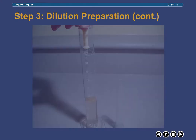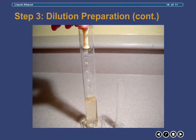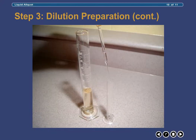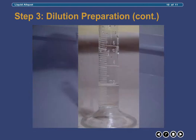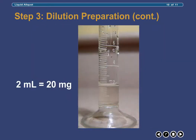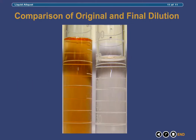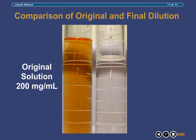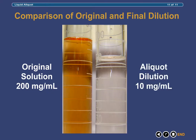Finally, from this dilution, we now measure back 2 milliliters, which contains the 20 milligrams of Preservative A that we desire. Cylinders containing the original 20% Preservative A solution on the left and the final aliquot containing 10 milligrams per milliliter Preservative A dilution on the right are shown here.